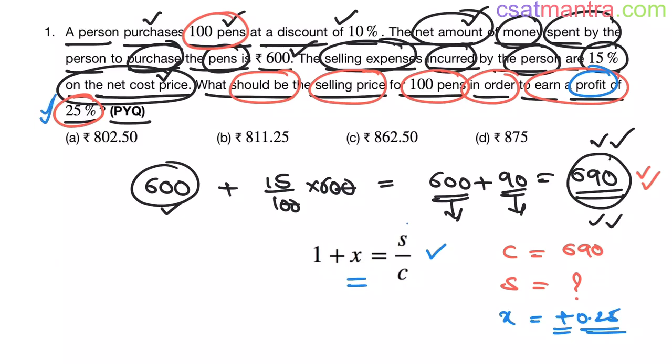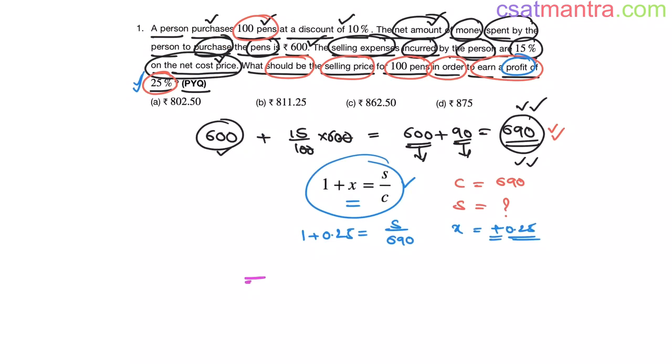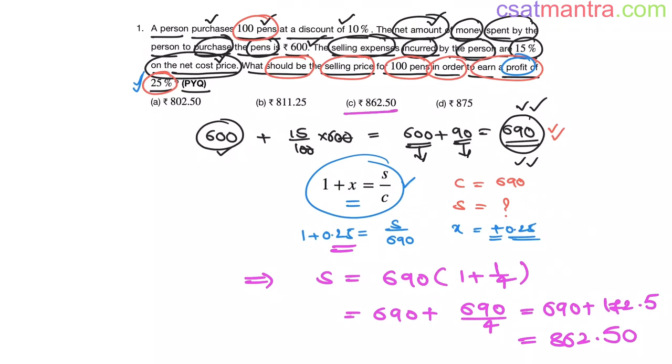So substituting these values in this equation, 1 plus 0.25 equals s. We do not know, we want that value. See, 690. Now this implies s equals 690 into 1 plus 0.25. I am writing it as 1 by 4. So this is 690 plus 690 by 4, 690 plus 172.5. This is 862.50. So our answer is c.